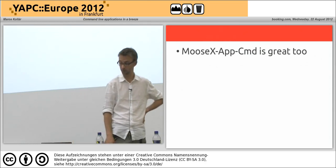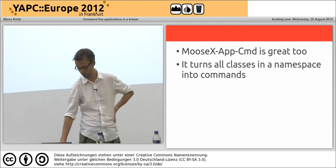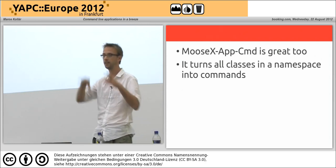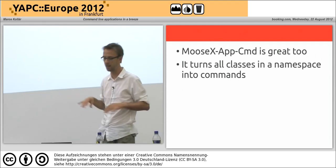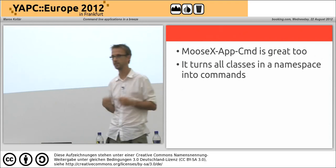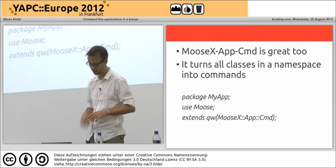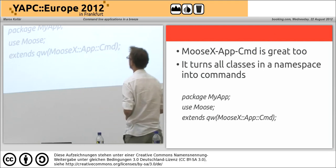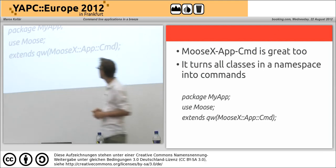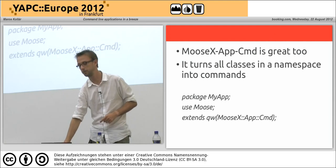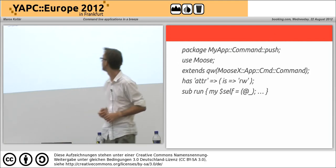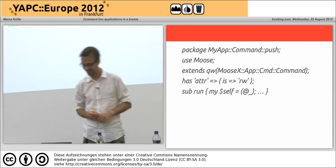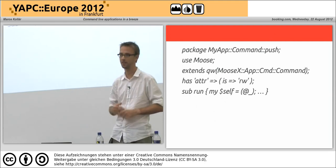I'm also going to introduce MooseX::App::Cmd. What it does is: you have a base class, and in the base class namespace you have multiple subclasses, and it turns each of those subclasses into a distinct command. A typical MooseX::App::Cmd application would look like: just create a base class, extend MooseX::App::Cmd, and then create multiple command classes — for example a command called 'push' which has to inherit from MooseX::App::Cmd::Command.